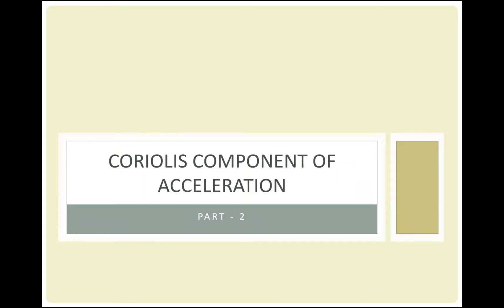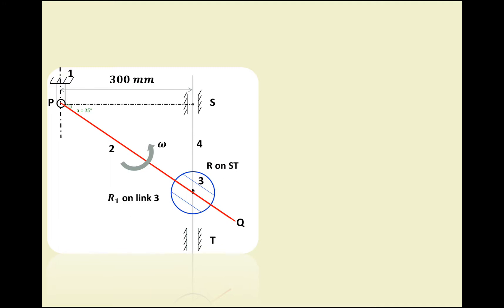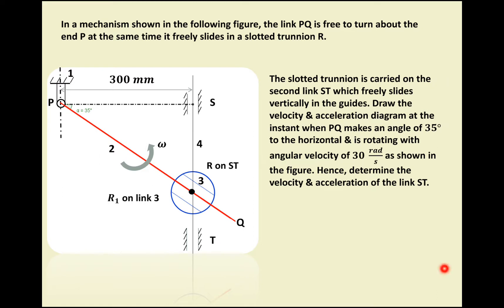In this video we will try to understand another typical example on Coriolis component of acceleration. The mechanism is as shown. We have the link PQ which is free to slide in the slotted trunion — link 3 — which is shown by this particular circle. This trunion is also carried on another link ST which is free to move in the guides shown by these hatch lines.